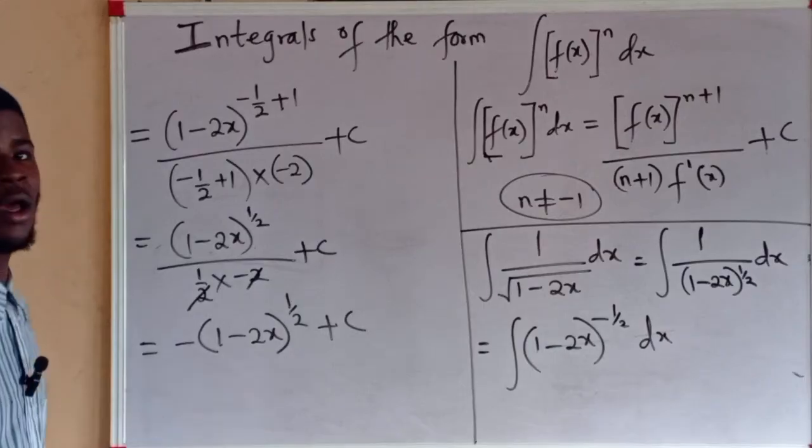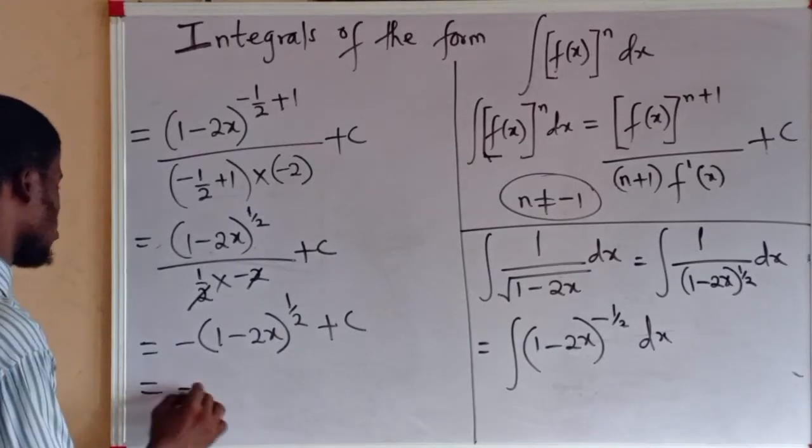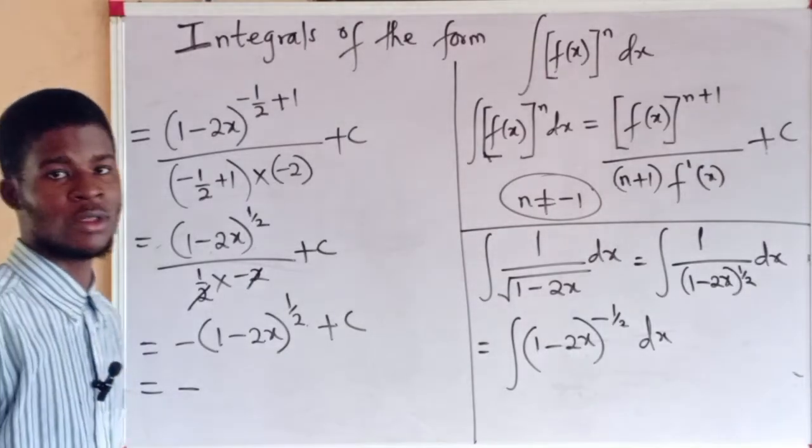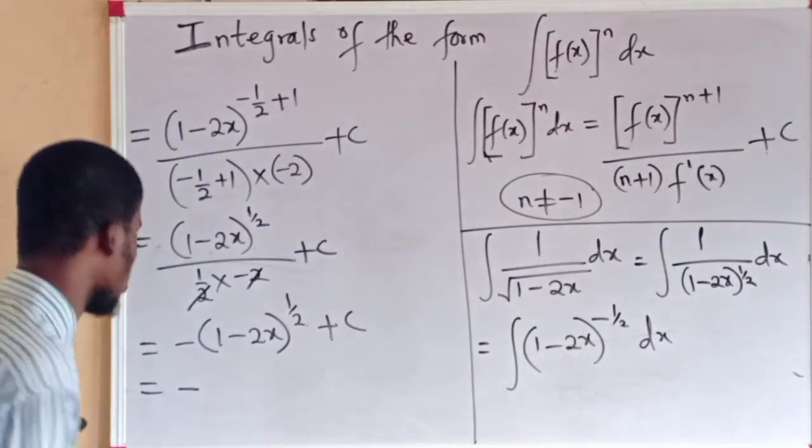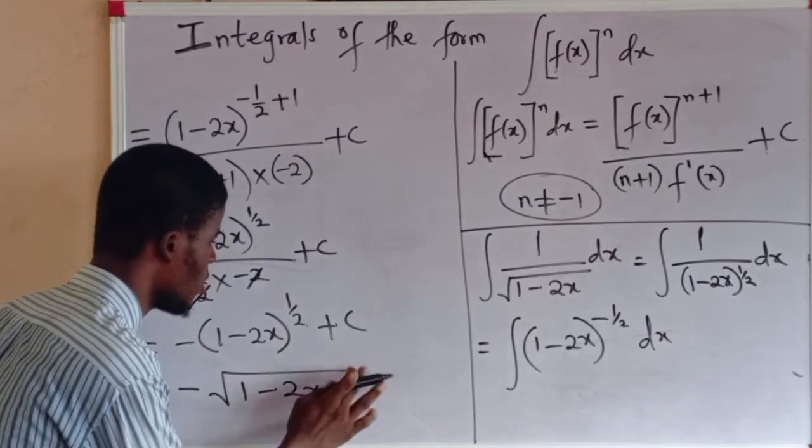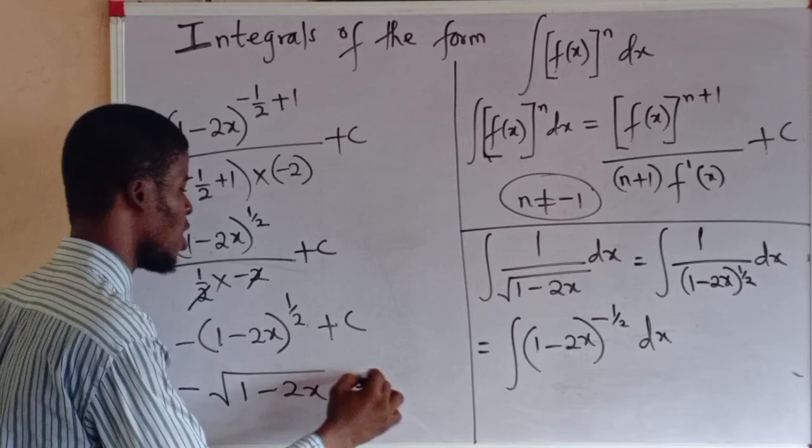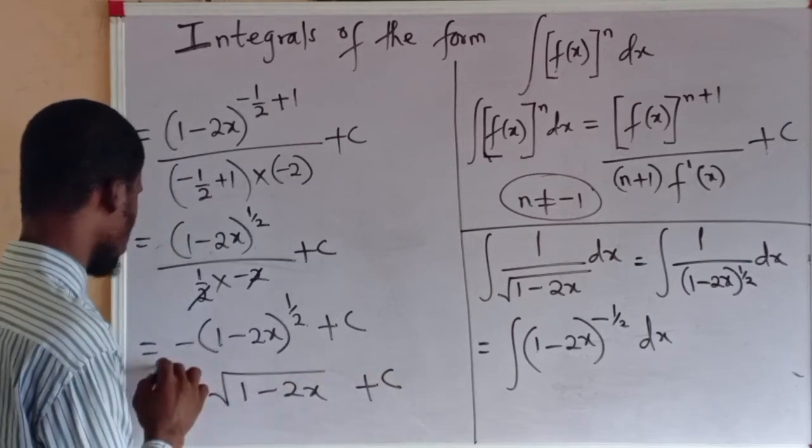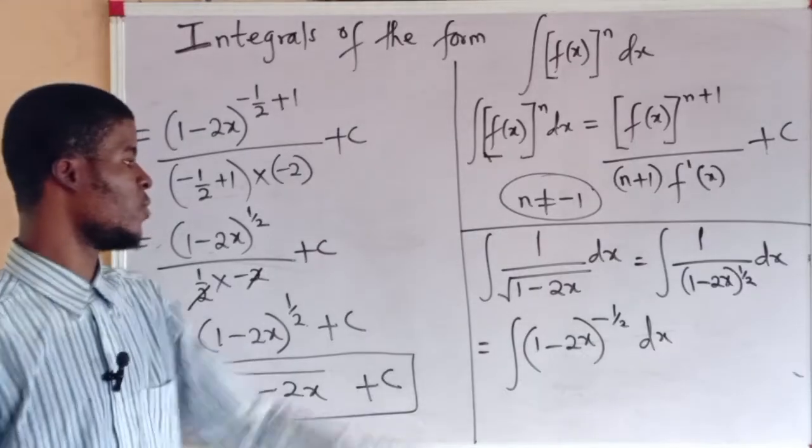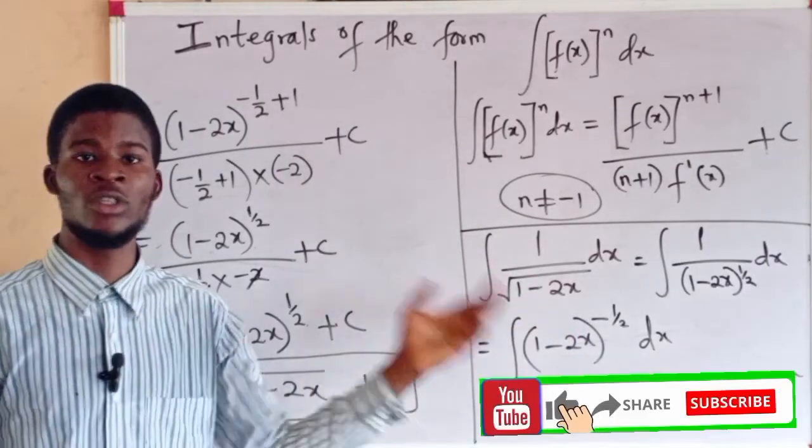You can leave it this way, or we can write it like this. Minus 1 over 2, the power of 1 over 2 signifies a square root. So we can take the square root of 1 minus 2x, plus the arbitrary constant. So this is the integral of this very function that we have here with respect to x.